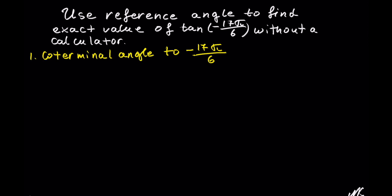Since the angle is negative, let's add one rotation, which is positive 2 pi. We are adding a whole number to a fraction, so 2 pi is out of 1. We need a common denominator of 6, so let's multiply 1 by 6. Whatever we do to the denominator, let's multiply the numerator by the same thing. So now we have out of 6: negative 17 pi from the first fraction, plus 6 times 2, which is 12 pi from the second fraction.